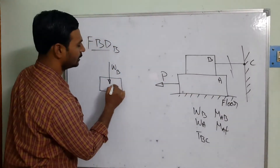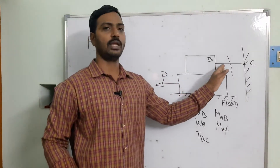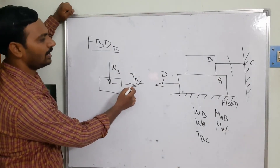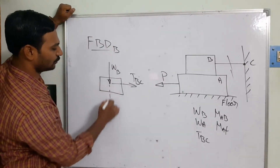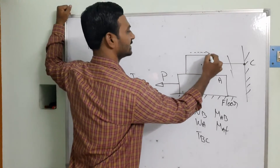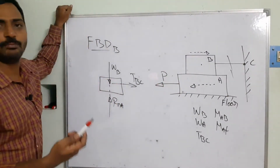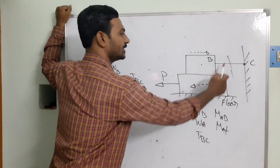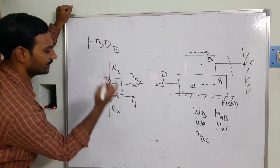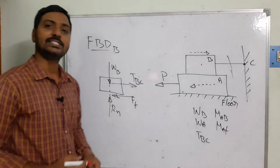For the free body diagram of block B: the self-weight WB acts downward. I cut the rope, so the tension TBC shows in this direction, because the pull is towards that side and the tension is trying to pull the object. I remove block A, so the reaction force RNA comes from A. Block B is trying to move towards the left, so the friction force develops opposing that motion — the frictional force acts towards this side.